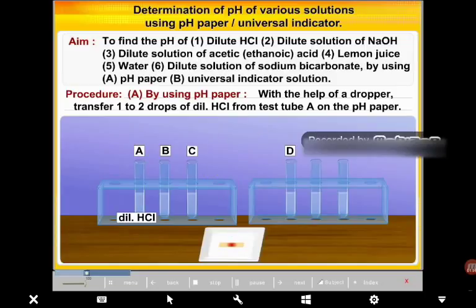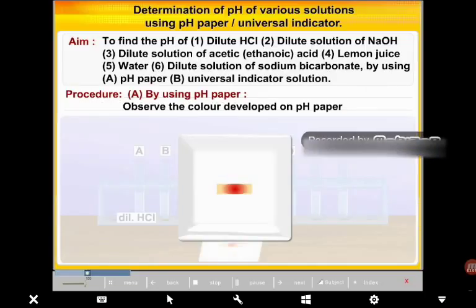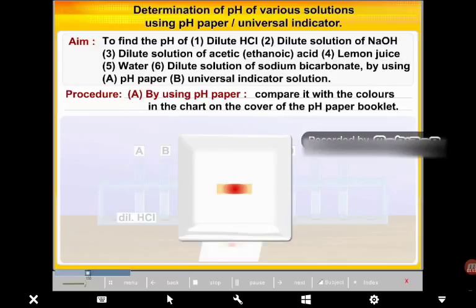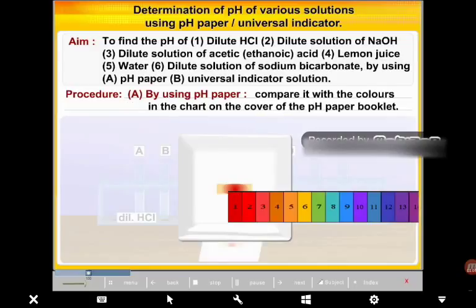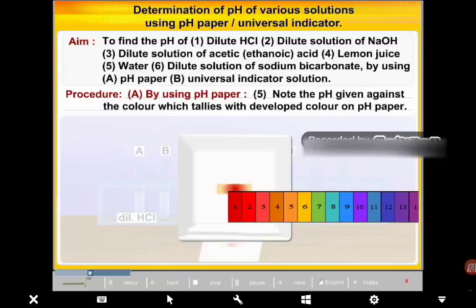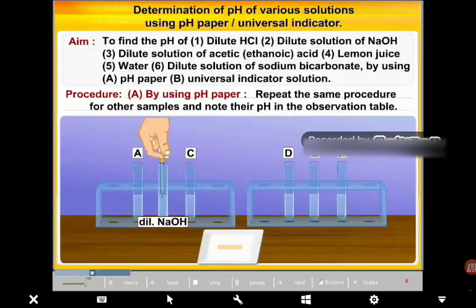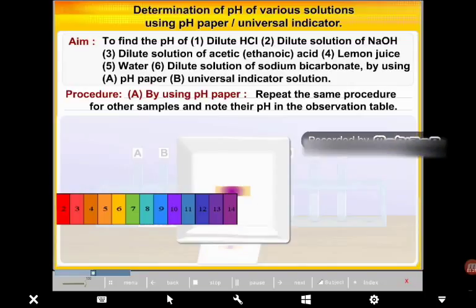Observe the color developed on the pH paper and compare it with the colors on the chart on the cover of the pH paper booklet. Note the pH value given against the color which matches the developed color on the pH paper. Repeat the same procedure for the other samples and note their pH values in the observation table.